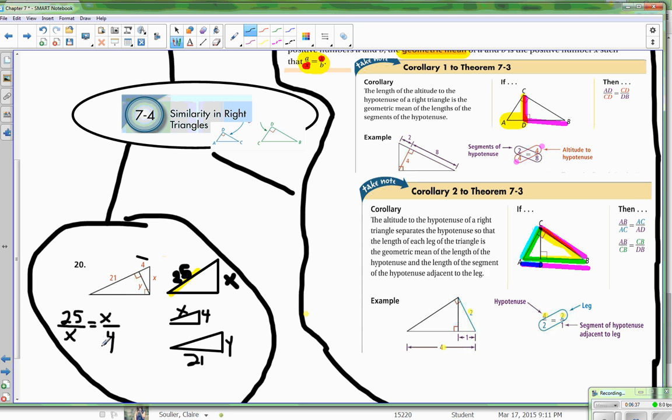So now I'm going to cross multiply and get X squared equals 100, because that's 4 times 25. And I know X is going to be equal to plus or minus 10. Well, we can't have a negative distance, so X is going to be equal to 10.